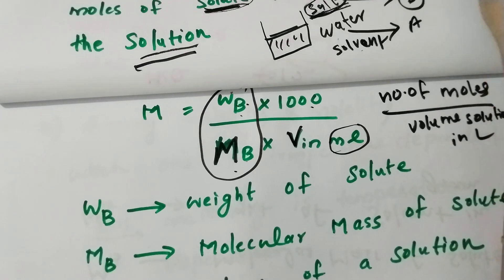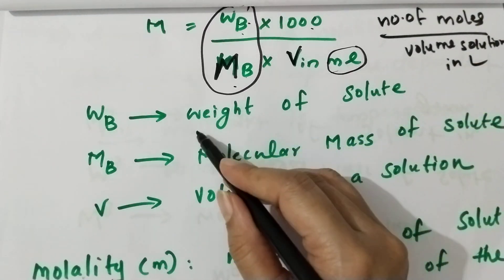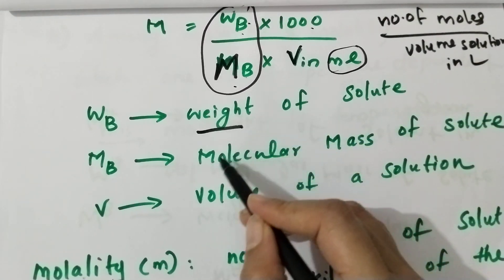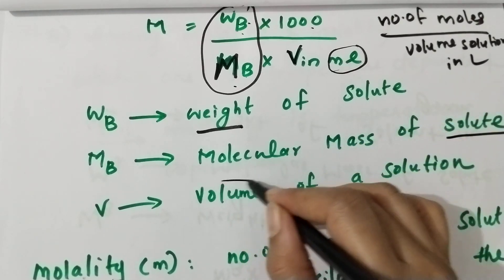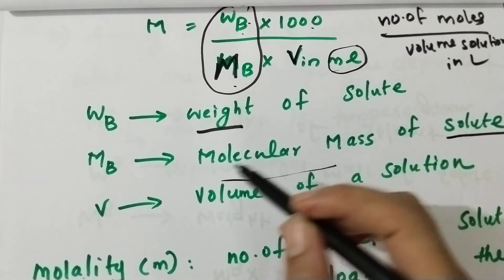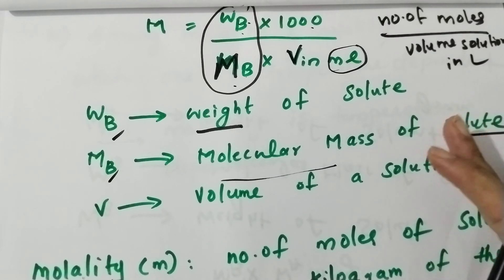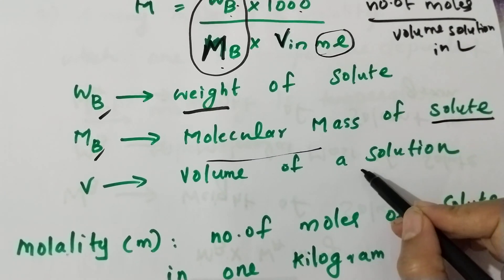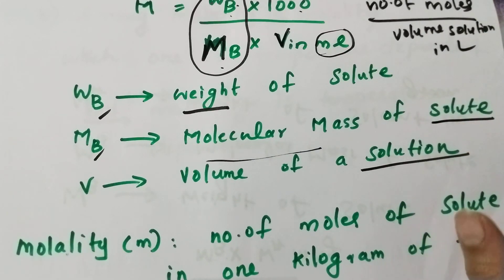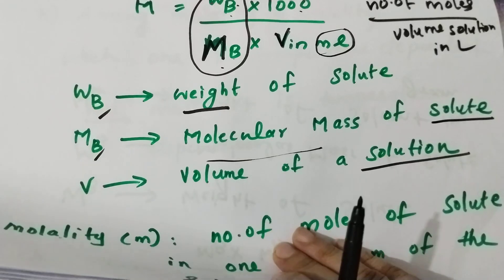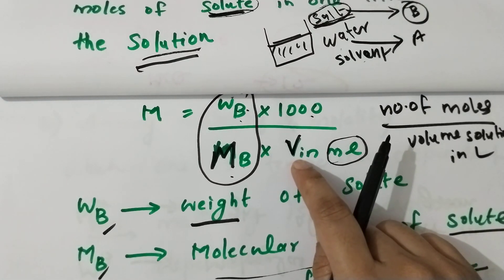WB is the weight of the solute. MB is the molecular mass of the solute. V is the volume of the solution.